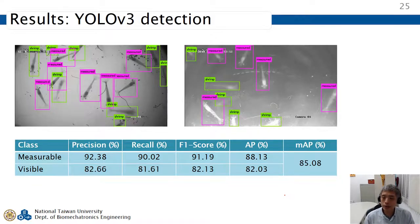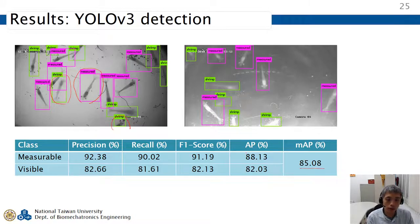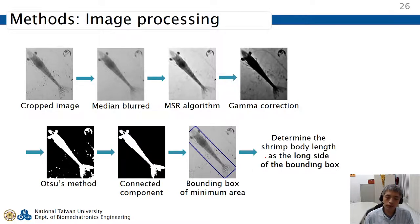Here are the detection results. The model can detect measurable shrimp, which are clear, and also visible shrimp that are blurred or incomplete. Overall we achieve a mean average precision of 85 percent, with higher precision for the measurable category.